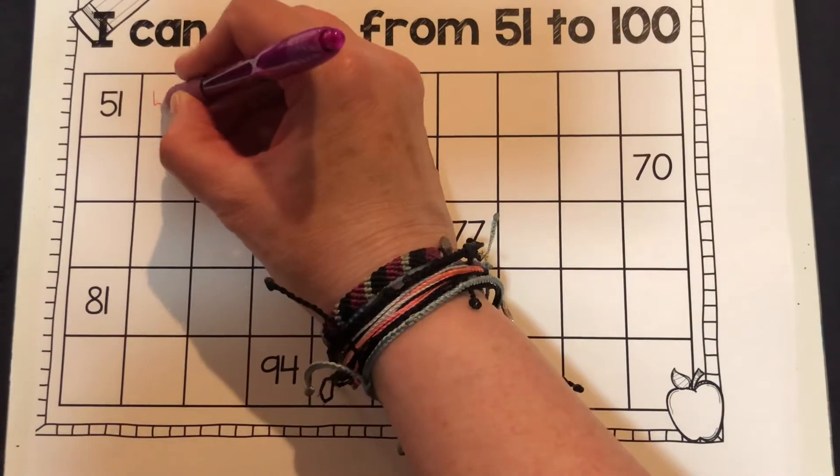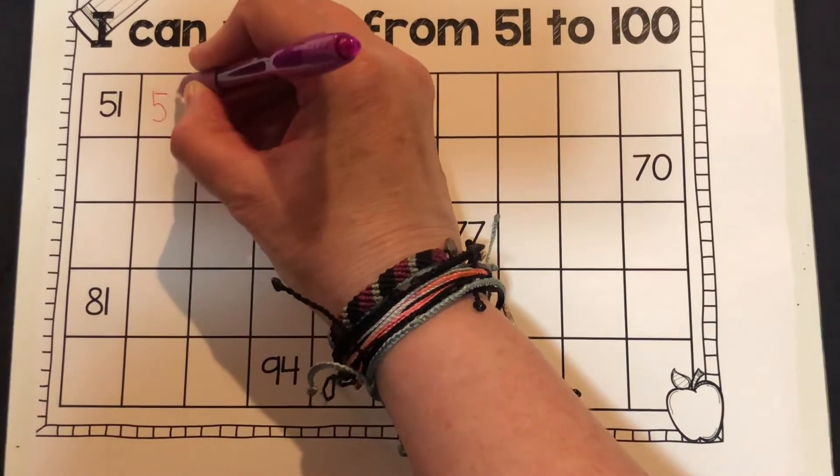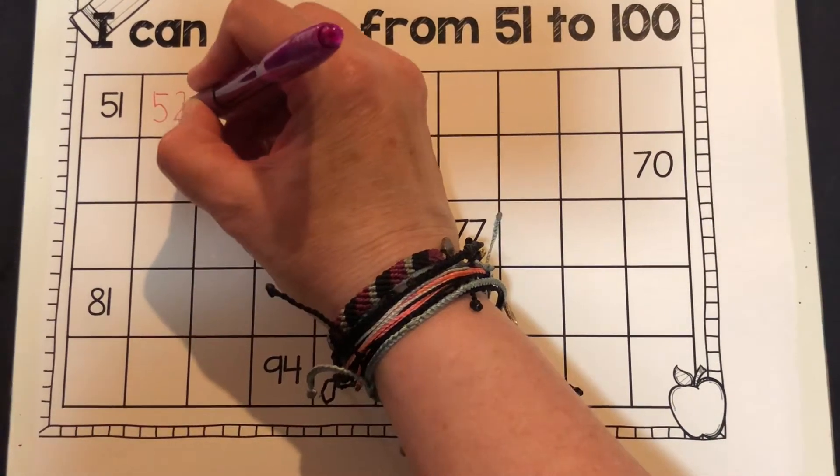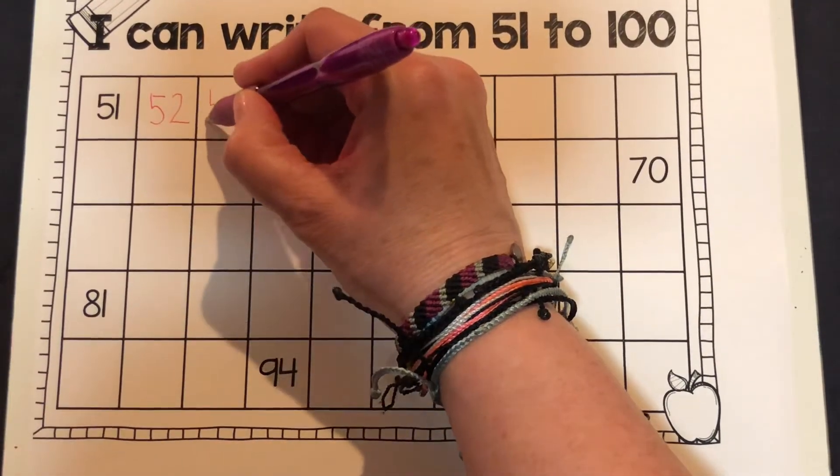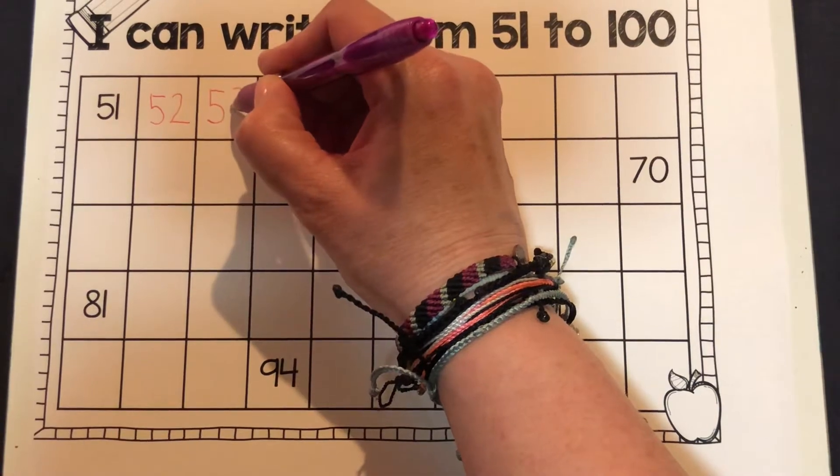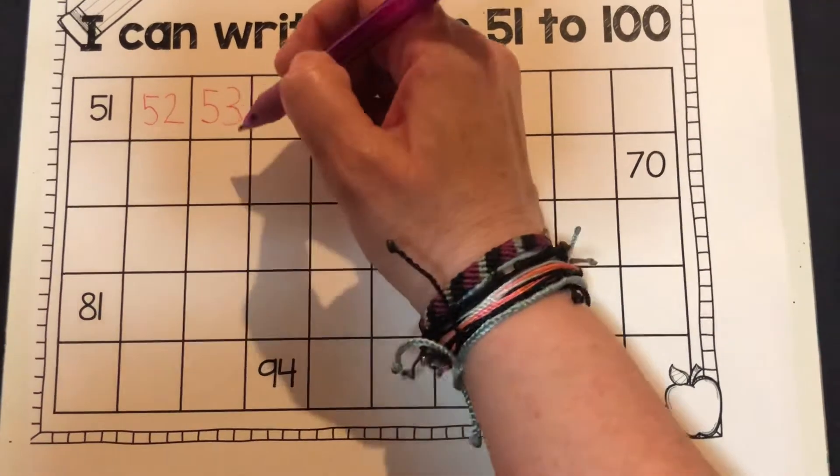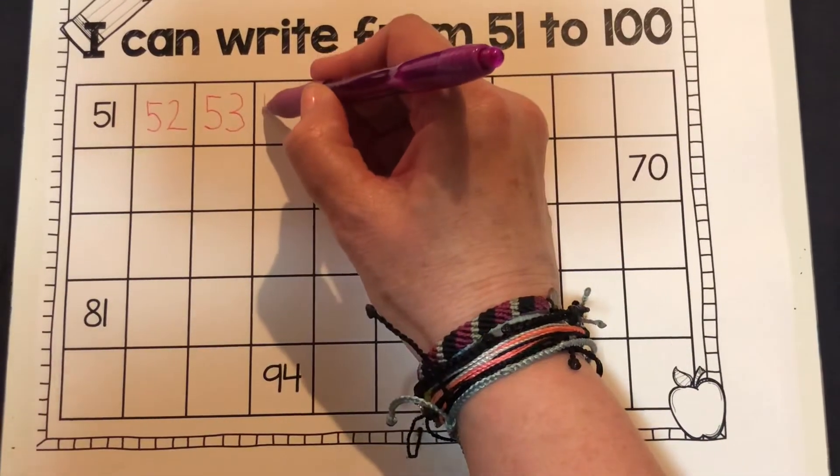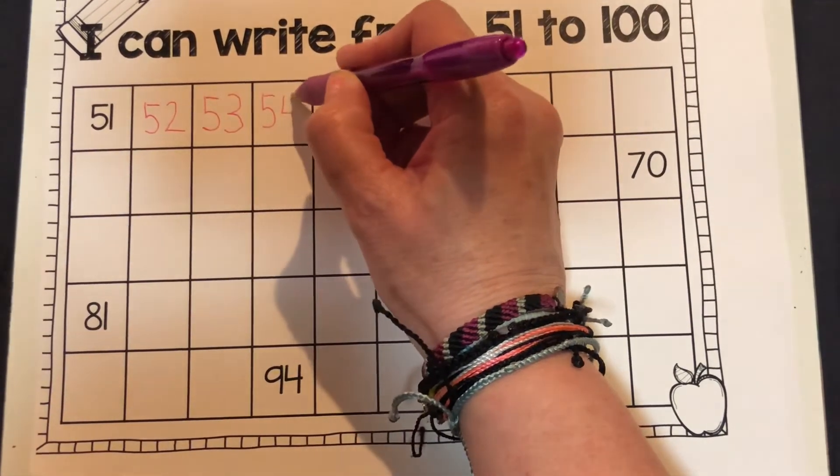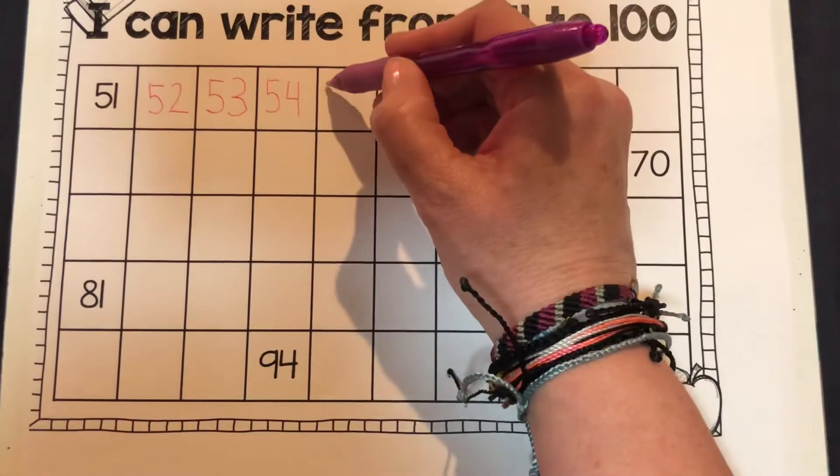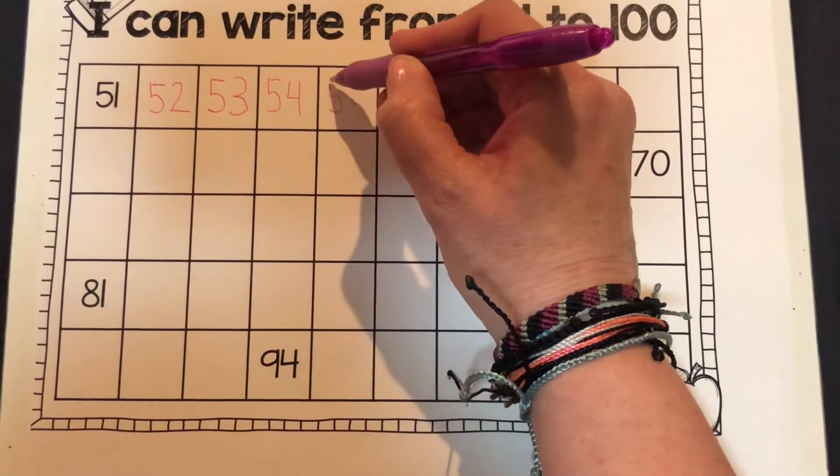Which is 52. This also helps us with our counting. After 52 comes 53. Make sure when you do that 3 you curve and go back. Then we have 54. Remember there's that frog jump. 55, you guys are so good at your fives.